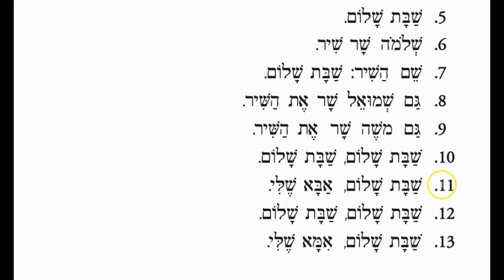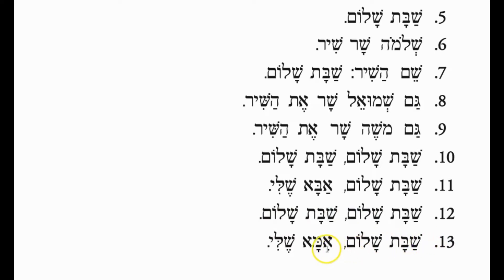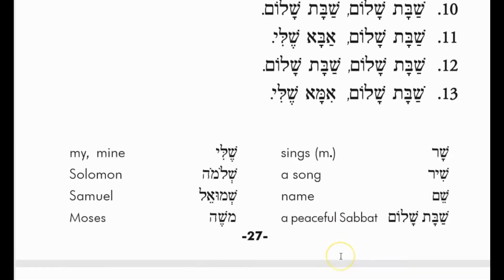Line 11: Shabbat Shalom Abba Sheli — Abba meaning my father, my daddy. Line 12: Shabbat Shalom. Line 13: Shabbat Shalom Ema Sheli — Ema meaning mommy, mother; Sheli meaning of mine, my mother. Okay, and now we have some vocabulary.